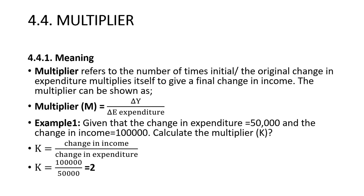Multiplier. The multiplier refers to the number of times an initial or original change in expenditure leads to a final change in income. The multiplier shows how your spending changes depending on how income changes. If income changes by increasing, how much does your spending change, and how long it takes — that is the meaning of the multiplier.